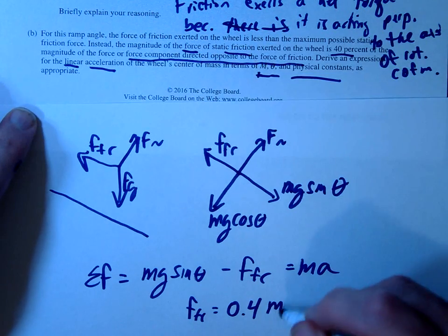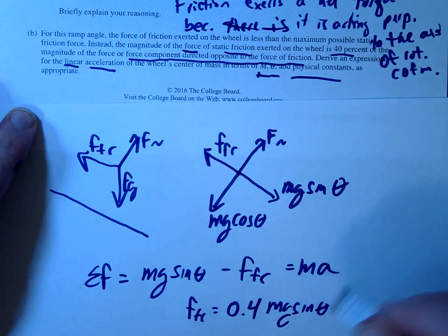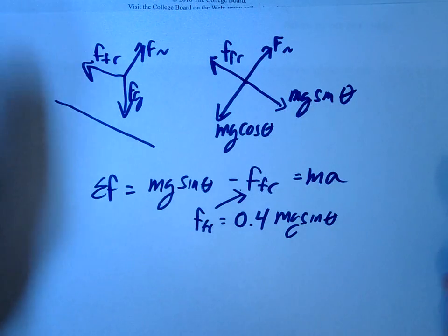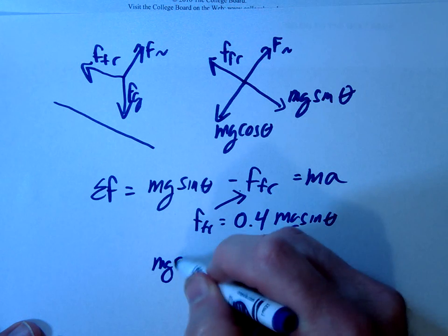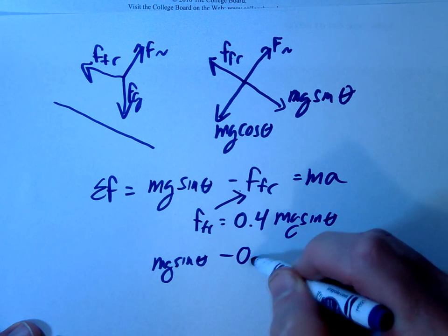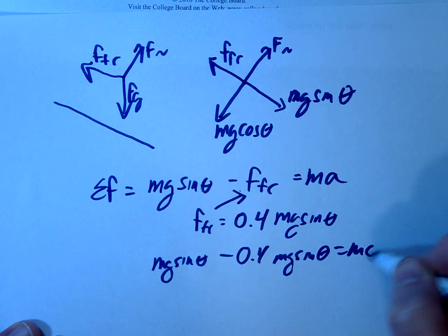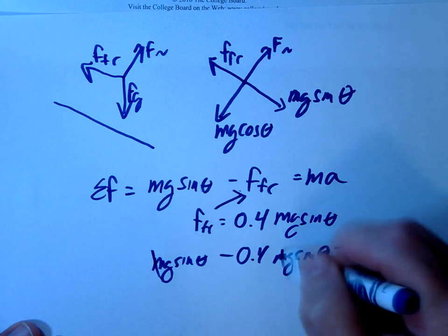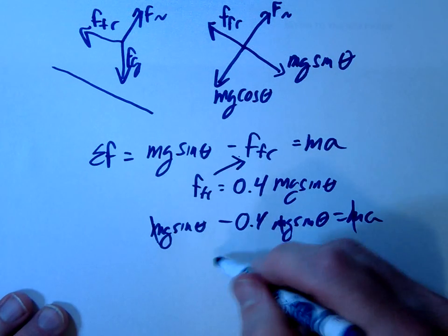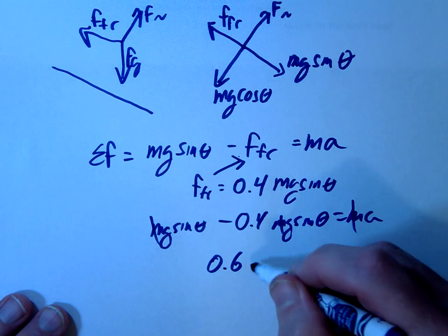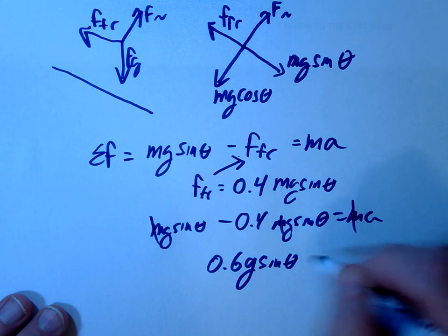So that means in other words friction is equal to 40% or 0.4 times the component opposite of it. So 0.4 mg sine theta. So we'll just go ahead and substitute in and we'll get mg sine minus 0.4 mg sine equals ma. M's do cancel and we could simplify this. So our answer should be 0.6 g sine theta equals a.